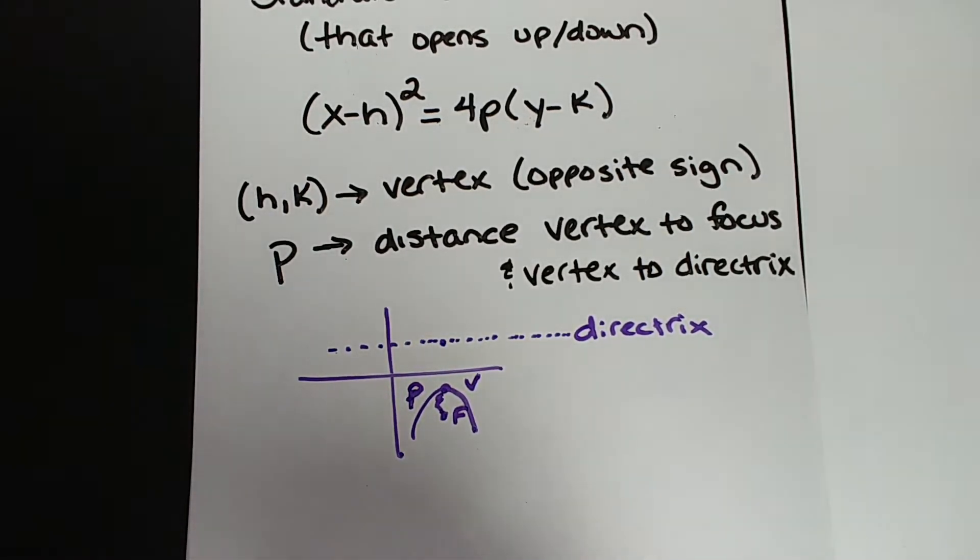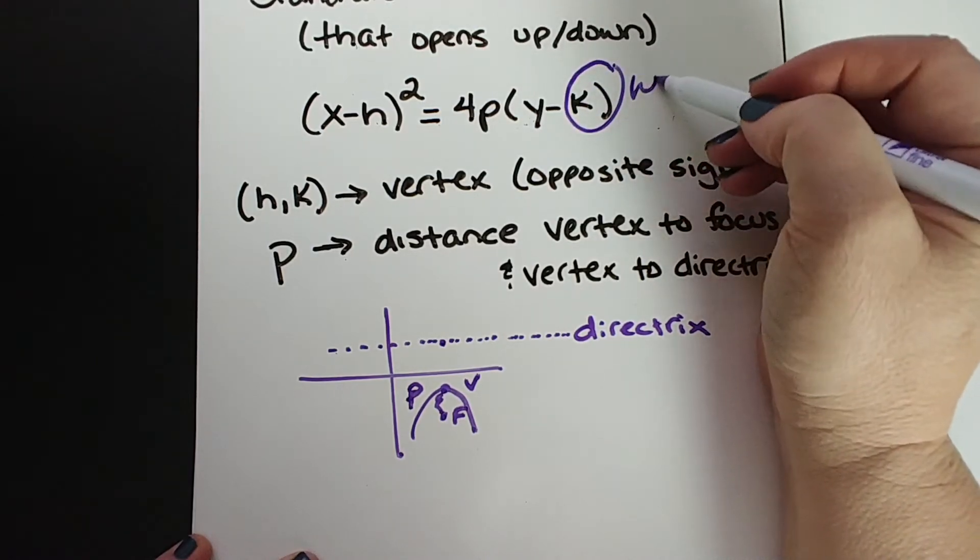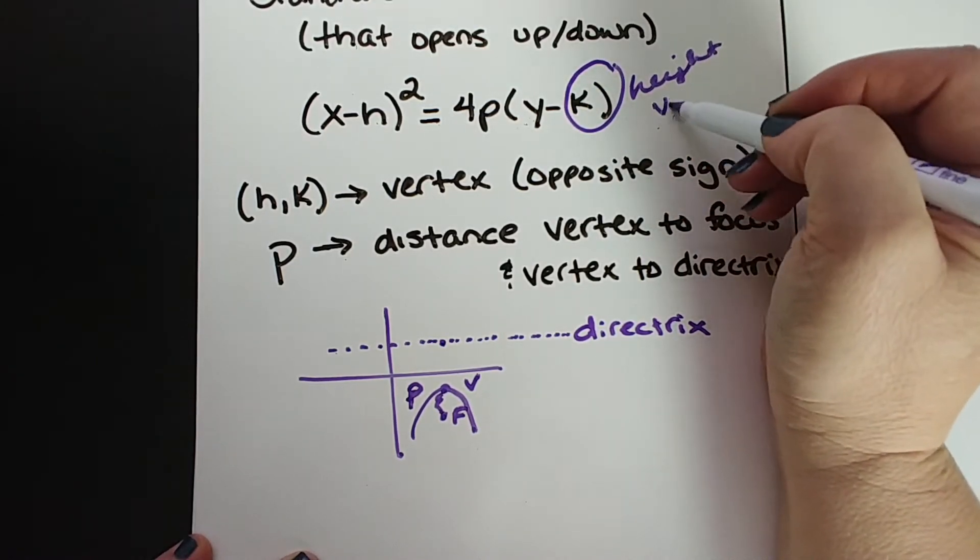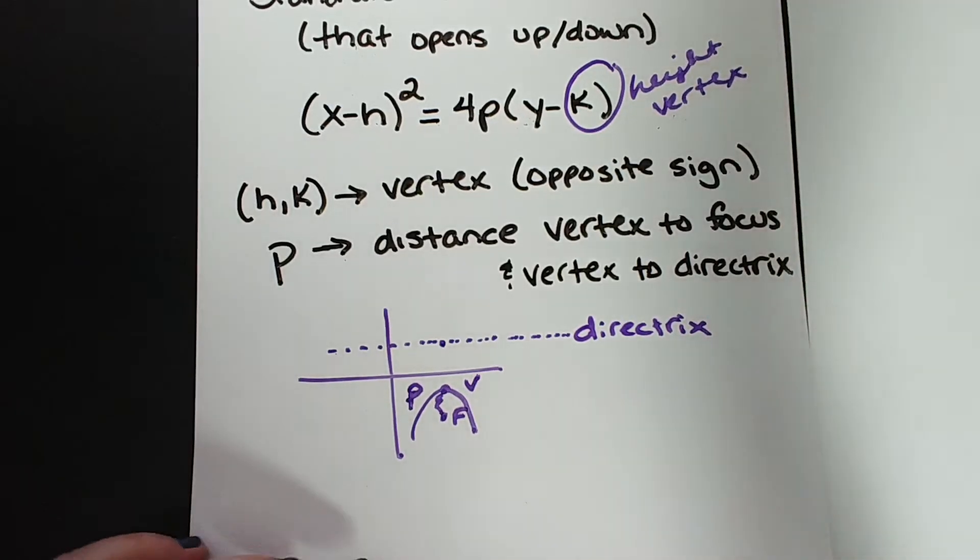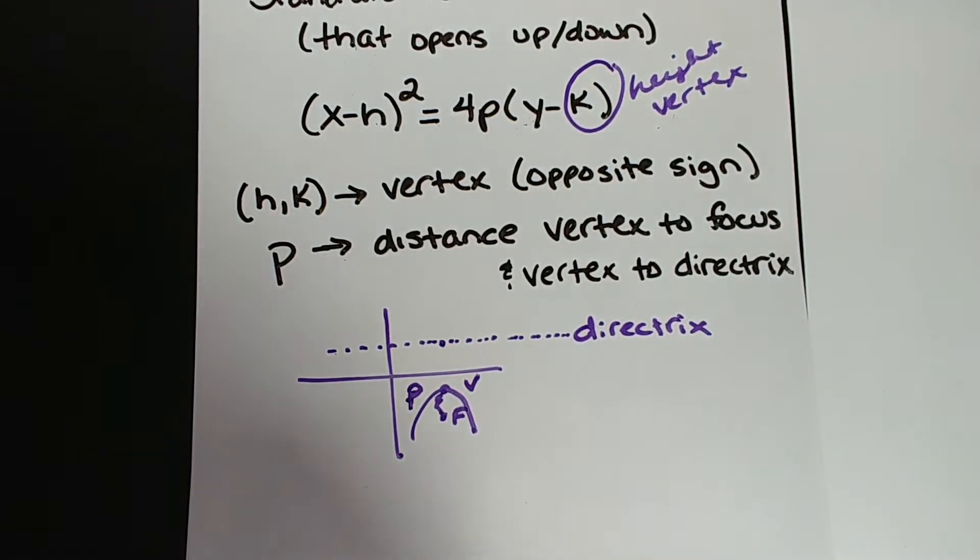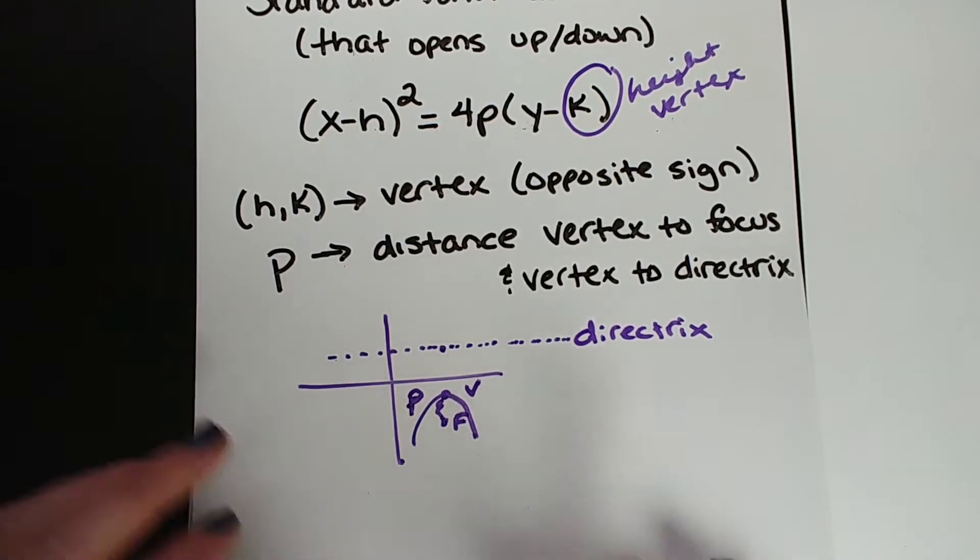This is all we need. We need to put this thing in standard form and then find the vertex. And by the way, the vertex, we need the y coordinate for the vertex, so we need the k. This is going to be the height of the vertex. So this word problem, you almost can ignore all the words as long as you know that maximum height is asking you for the vertex.